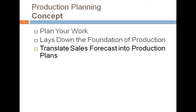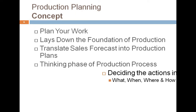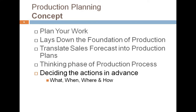For example, if at the end of the year I need to produce 10,000 units of product X, my production plans will determine what needs to be taken care of. This includes whether on a monthly, fortnightly, weekly, or quarterly basis — how many units I need to produce. It is just the thinking phase of the production process; no execution of work is being carried out, only planning.